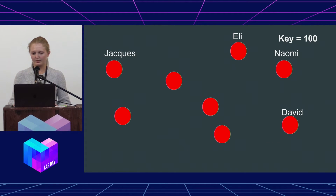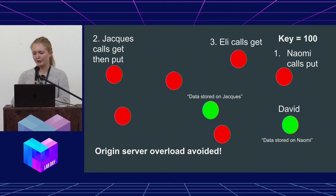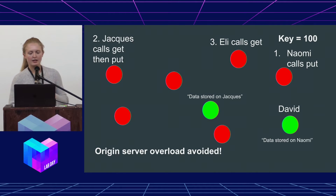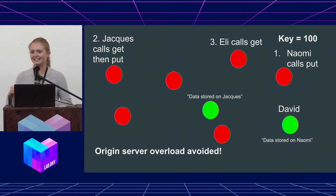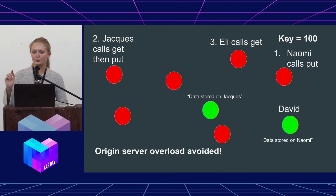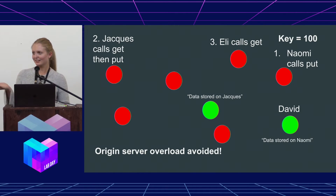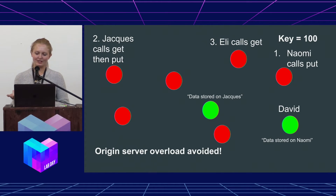Let's walk through an example really quick. Let's say this node, Naomi, knows about a really cool video. She hashes that URL to the value 100. Now what's going to happen? Naomi calls put on the whole Coral system, and in a series of RPCs to intermediate nodes, she's going to hop — not directly to the node that corresponds with 100, but to a couple of intermediate nodes. You'll see why that's really important later, so keep that in mind. Eventually she'll wind up at David, little green David, and she'll store her node's address at David. And now David is storing Naomi's address.